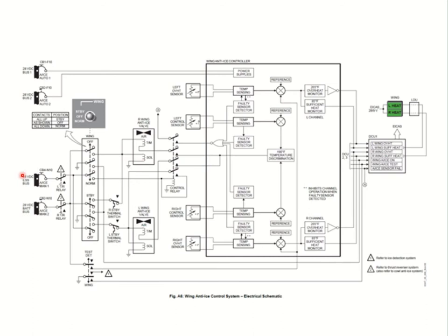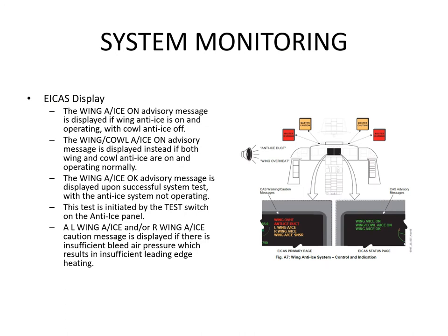The thrust reverser relay is there to prioritize the thrust reverse system because of the demand on the 14th stage air supply. To summarize: in normal mode the controller controls the anti-ice valves; in standby mode the controller is out of the equation for valve control. However, in both modes the controller continuously performs overheat monitoring and sensor failure monitoring. If the overheat sensor fails, it generates a sensor fail caution message and inhibits the overheat warning to prevent spurious indications.